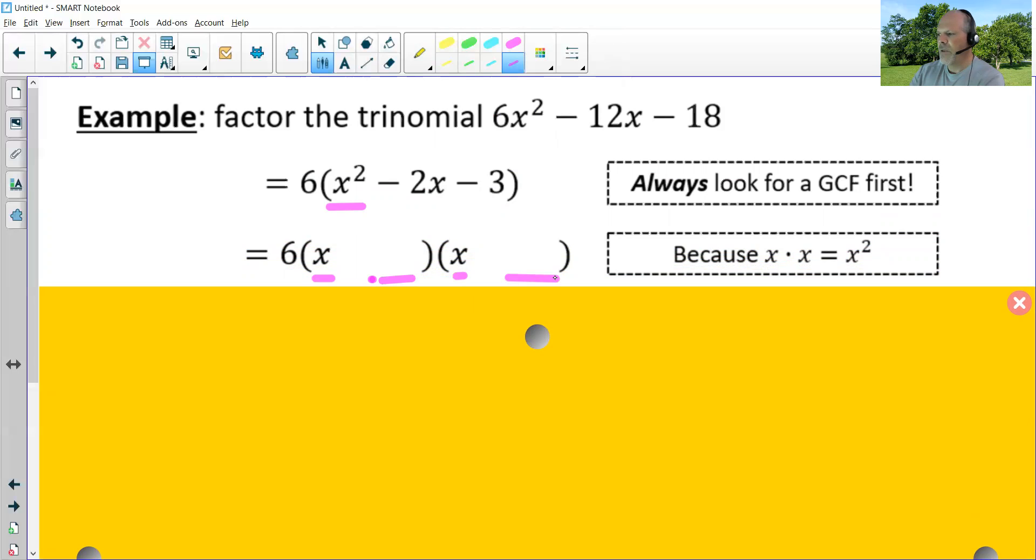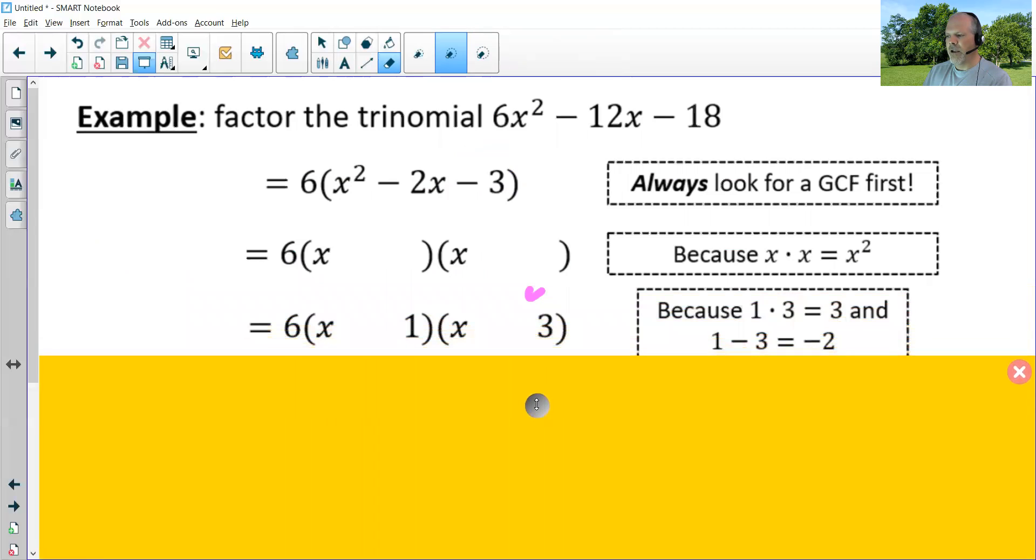However, I know that the last terms must multiply together to give us negative three. And there's only one set of factors that can equal three and that's one times three. One of them will be positive, one of them will be negative because it has to equal negative three. So I already know that I can write in my binomial as shown.